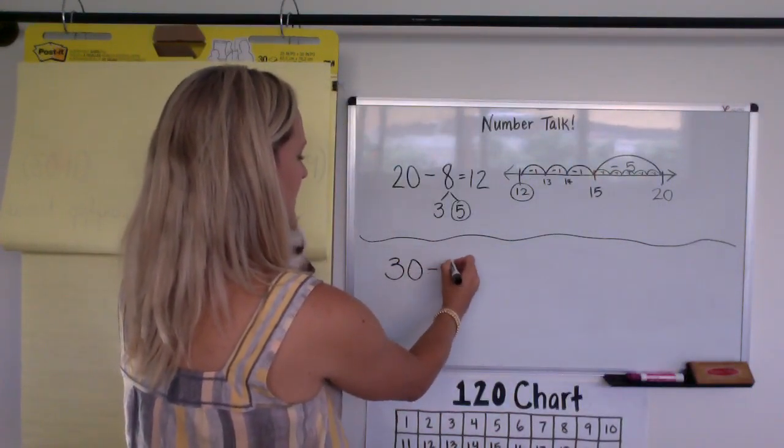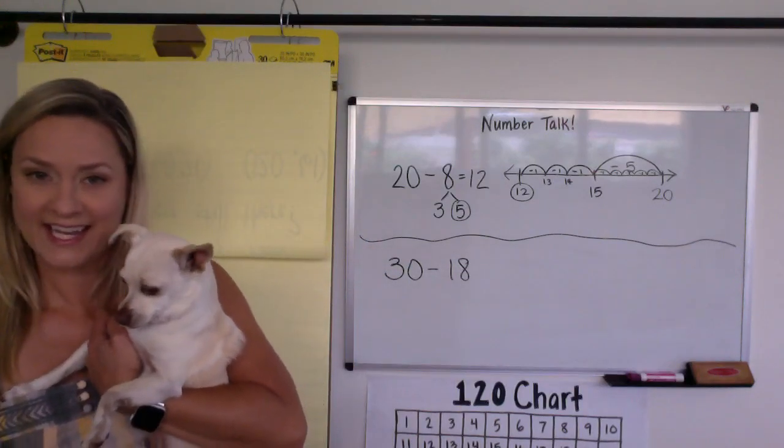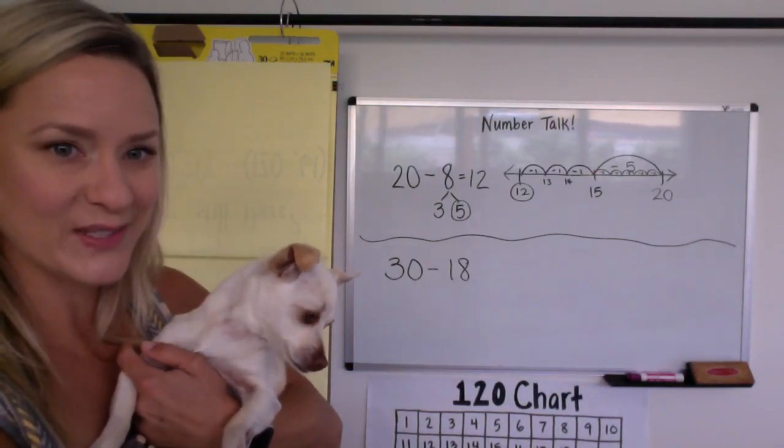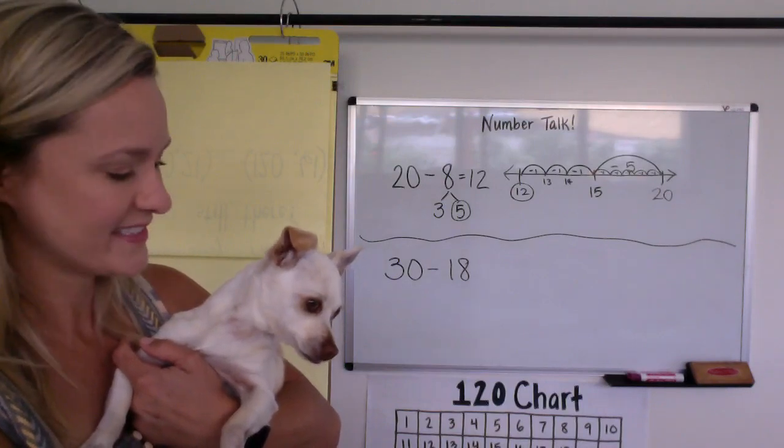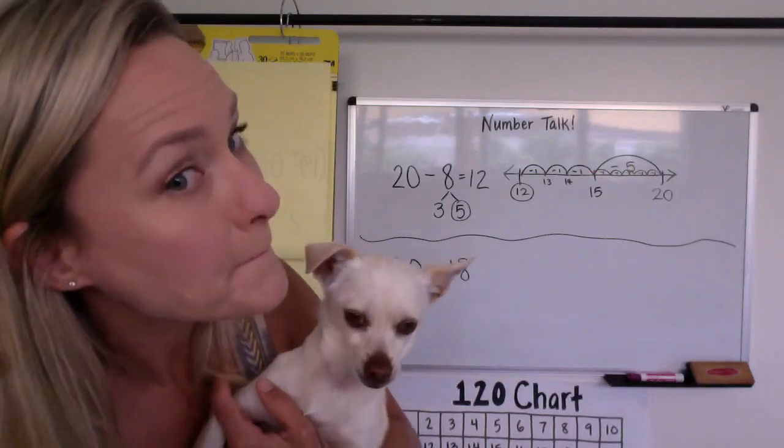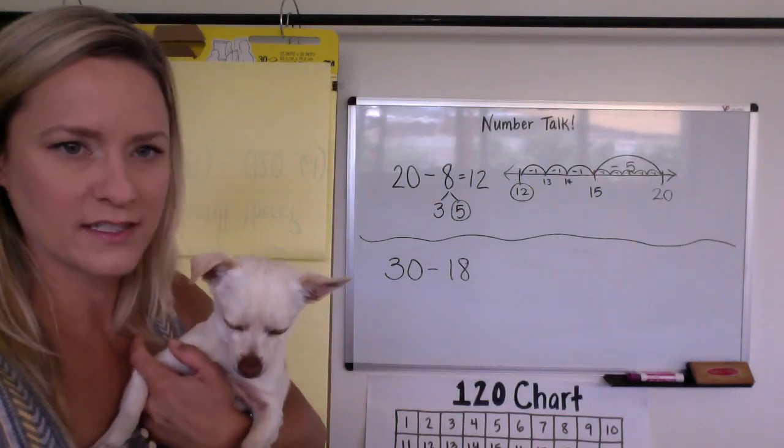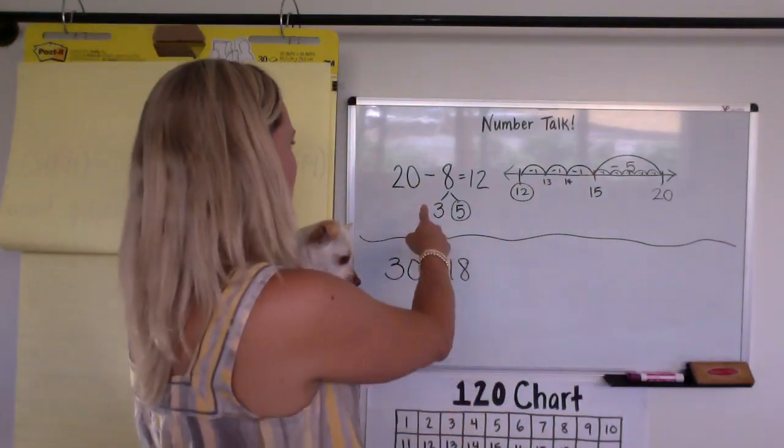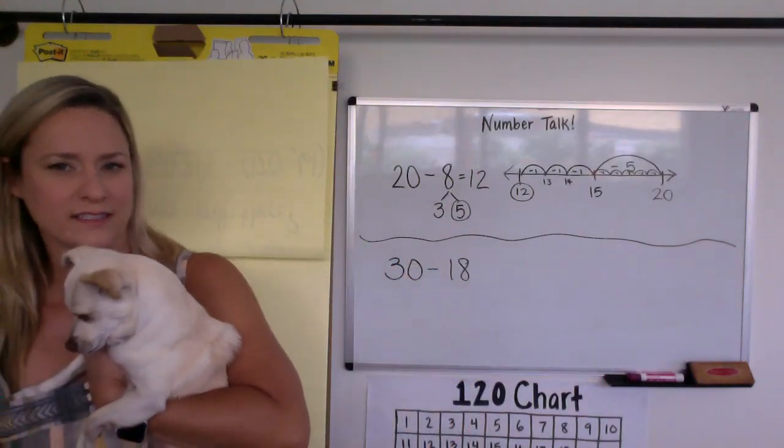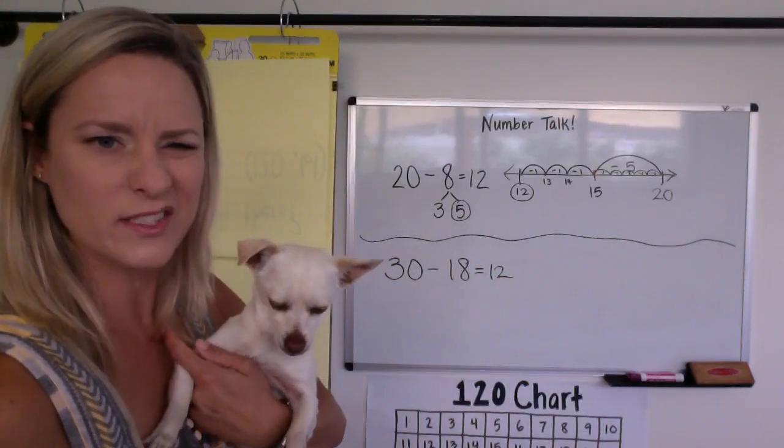30 minus 18. Everybody hit pause and solve 30 minus 18 in your head. Unpause when you're ready. On the count of three, everybody tell me: 30 minus 18. One, two, three, tell me. Did you yell at me that it's actually the same answer? You did, huh? I heard you. So you said it's going to be 12 again. Hmm. I wonder why that is. Can you figure out why it's 12 again? That's weird because we have different numbers. We have 20 minus 8 there and 30 minus 18 here. Why are both answers 12? That's kind of weird. Can you figure it out?